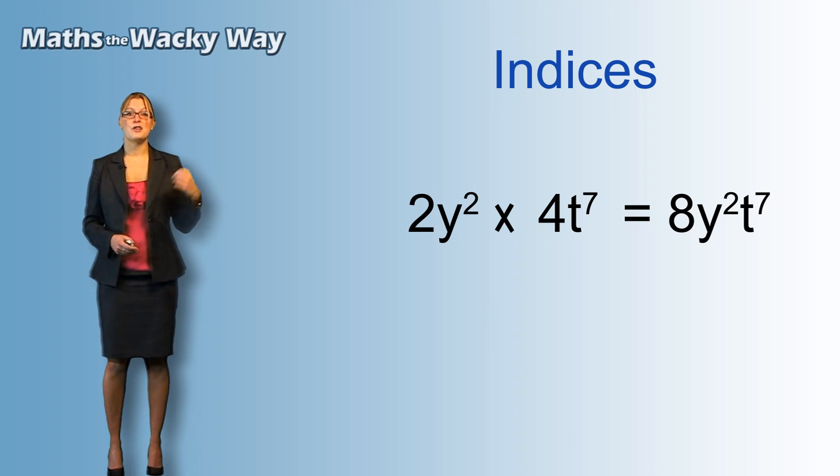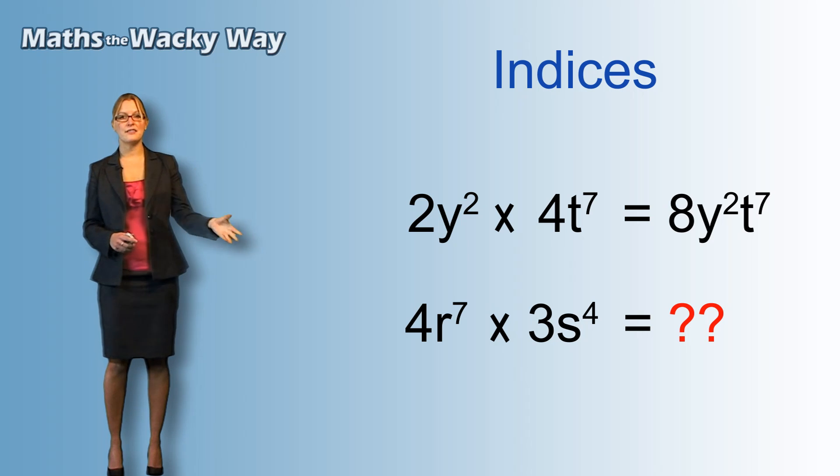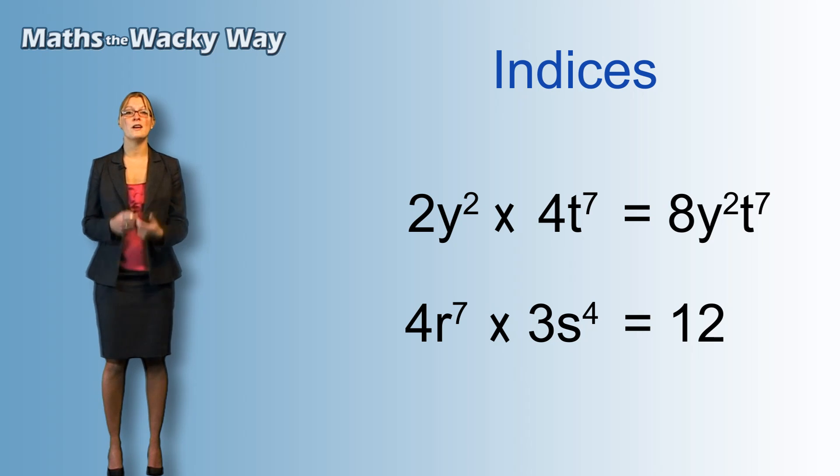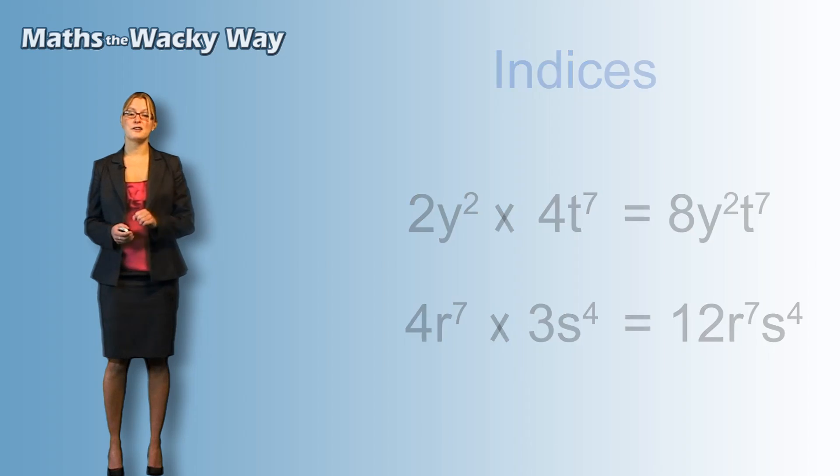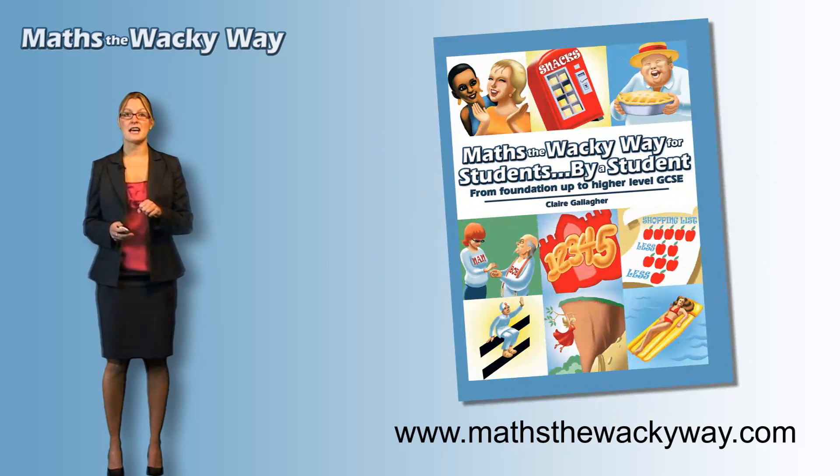And just to run through another one, you've also got 4r to the power of 7 times 3s to the power of 4. Hopefully you can see what's going to happen. Again, the 4 and the 3 can come together to give us 12, but the r to the power of 7 and s to the power of 4 will just come together. So we end up with 12r to the power of 7 s to the power of 4. That concludes the indice chapter. Hope you found it helpful. And obviously, if you see these in the exam now, you should be able to do these with no problems.